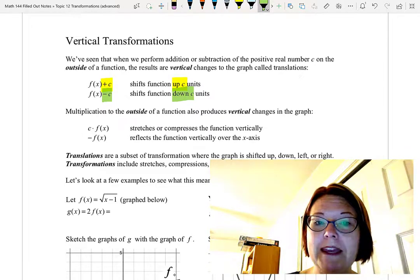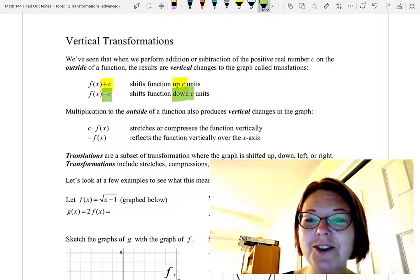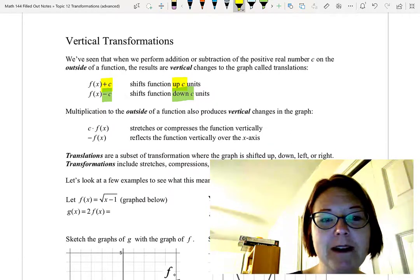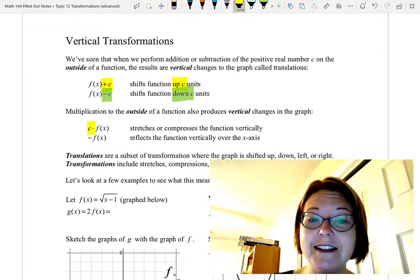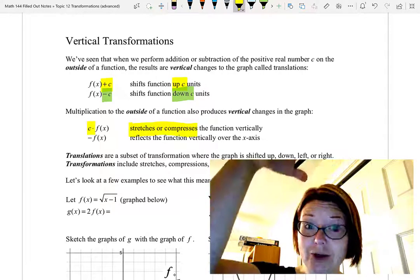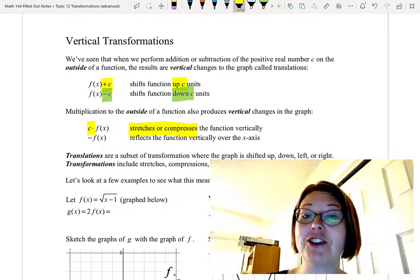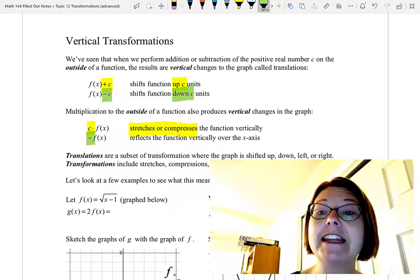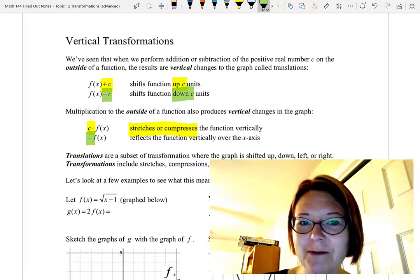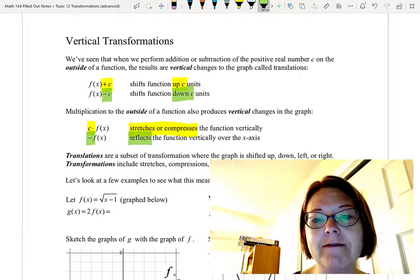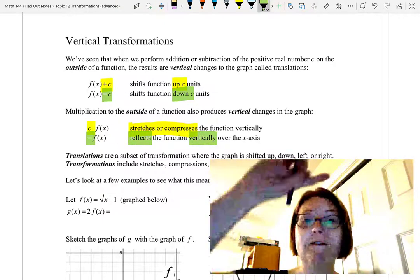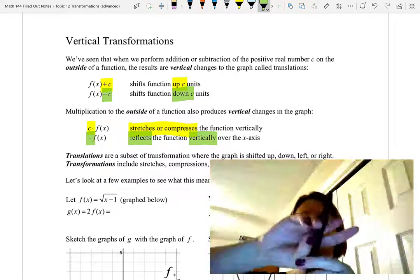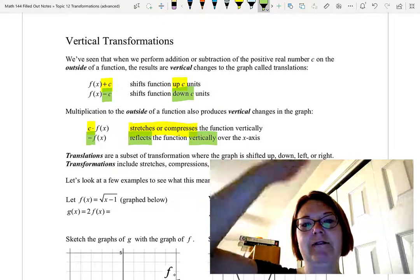Likewise, multiplication to the outside of the function also produces vertical changes to the graph. If we multiply on the outside by a constant c, this is going to stretch or compress the function vertically. If we multiply on the outside of the function by a negative, which is essentially a negative one, then this reflects the graph vertically. In other words, it reflects the graph over the x-axis, so kind of like you're taking the page of a calendar and flipping it down.